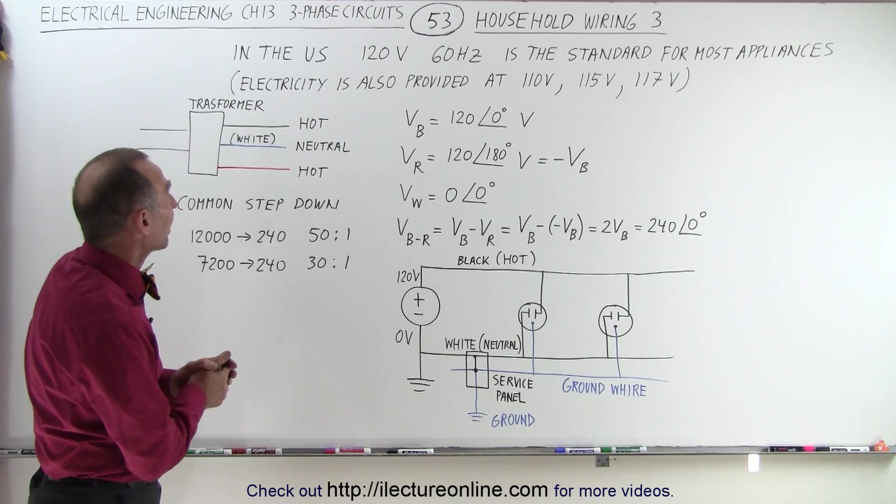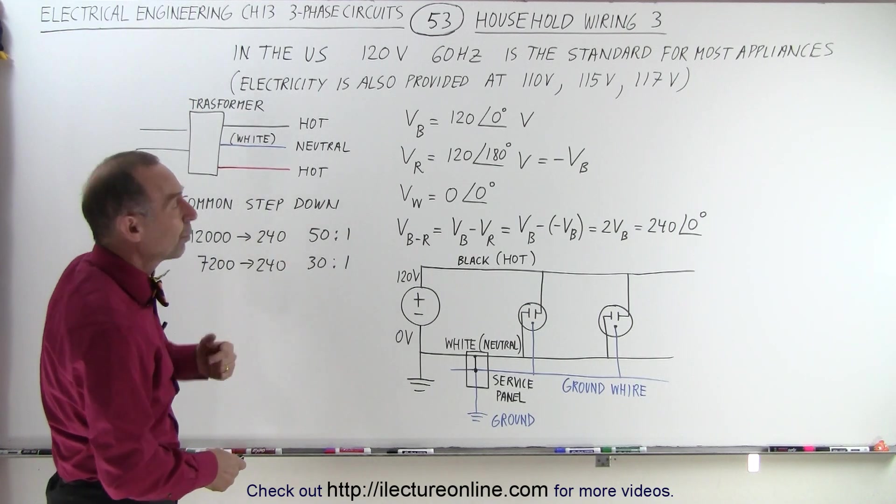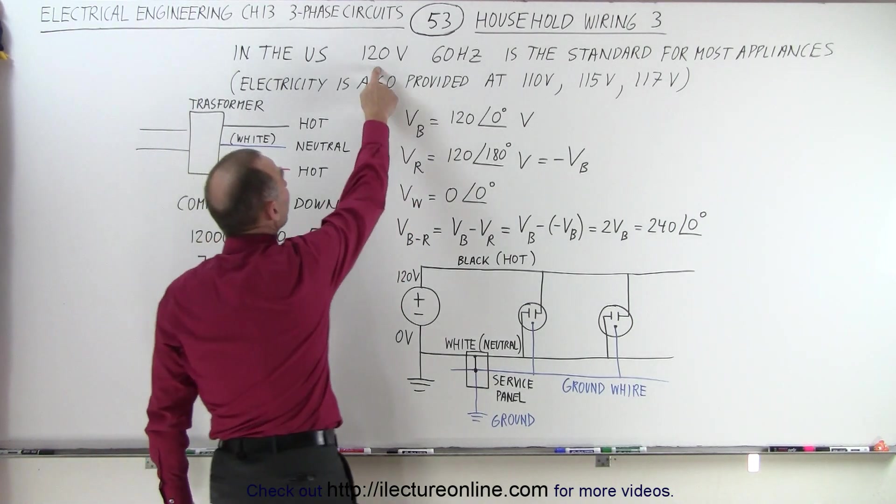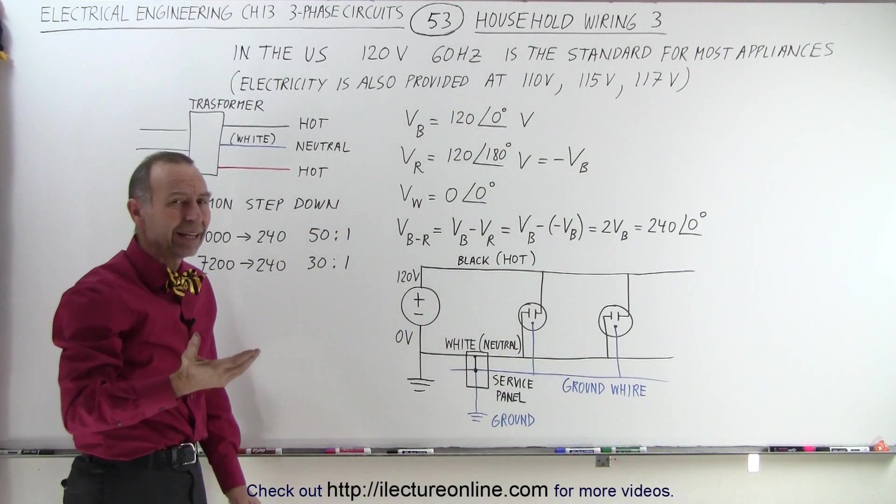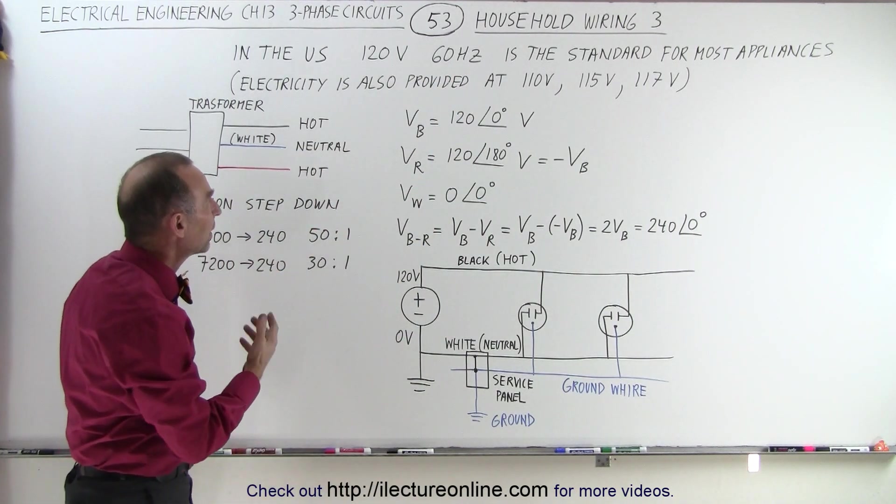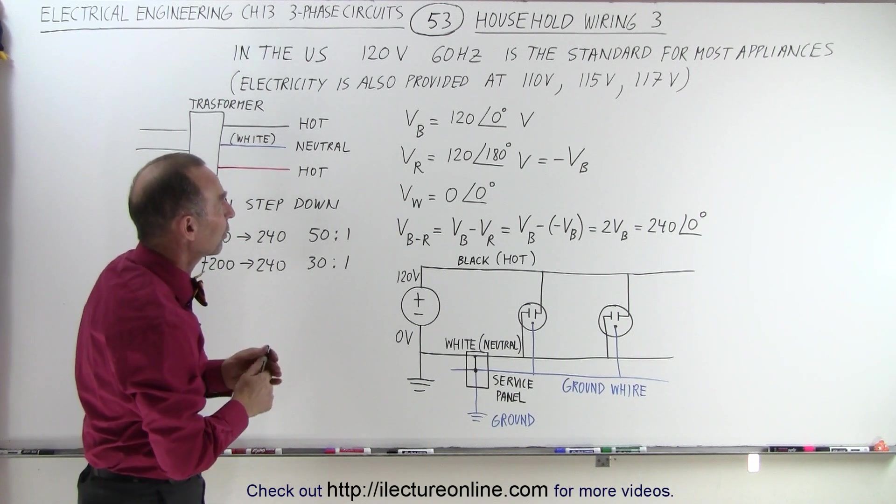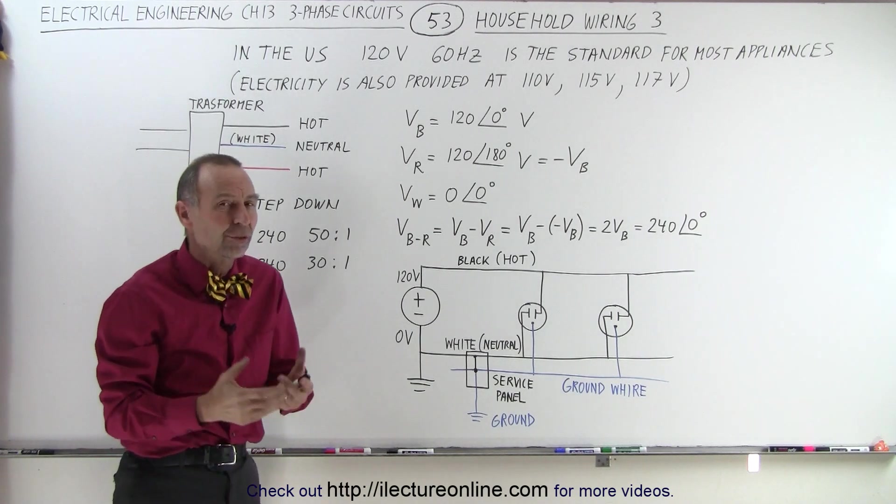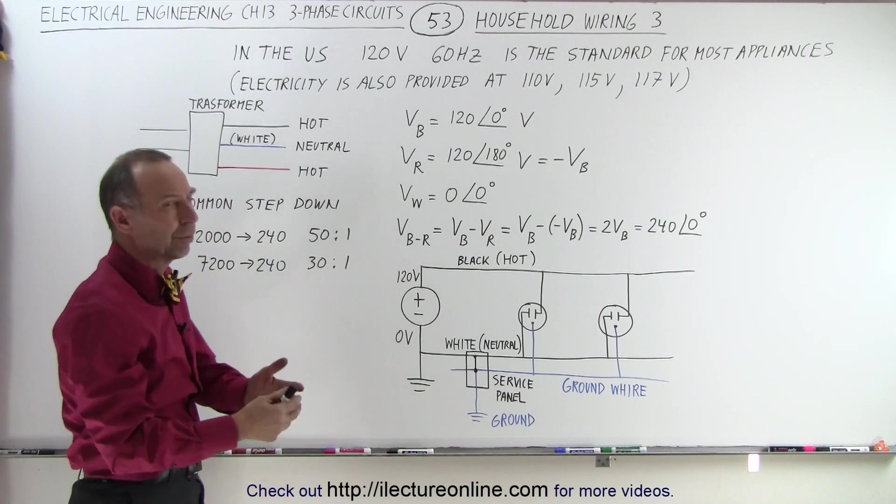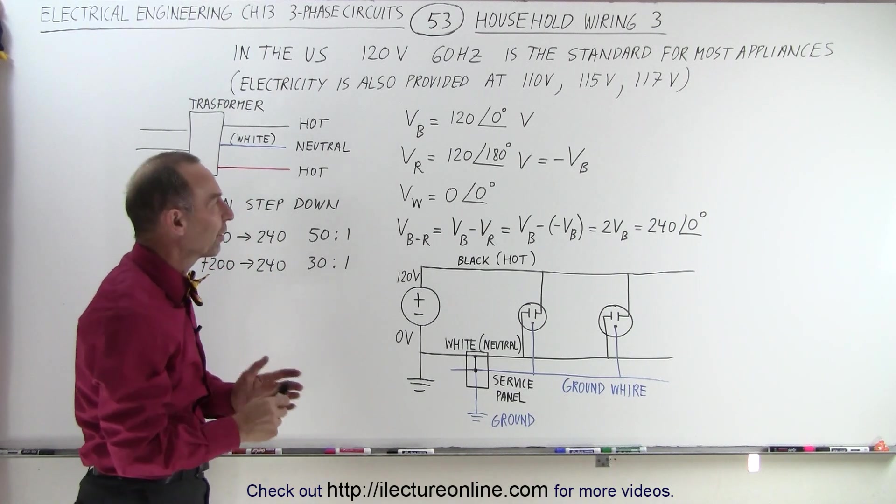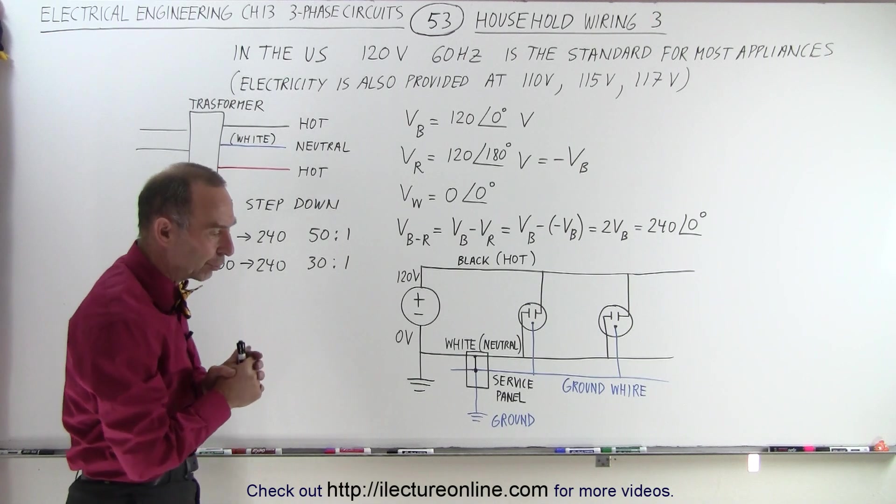First of all, we recognize in the United States we typically work off 120 volts 60 hertz type of circuits. In Europe it's 50 hertz and 220 volts, but here we typically use 120 volts at 60 hertz which is a standard for most appliances: light bulbs, computers, televisions, toasters, little portable heaters, all those various things work off of about 120 volts.